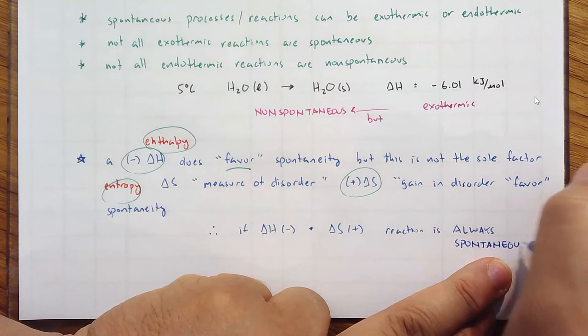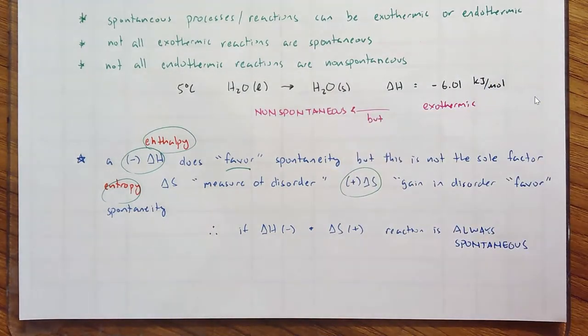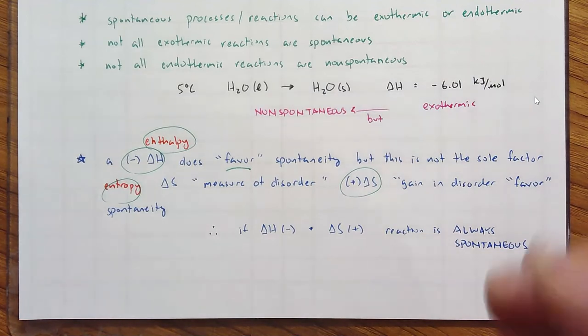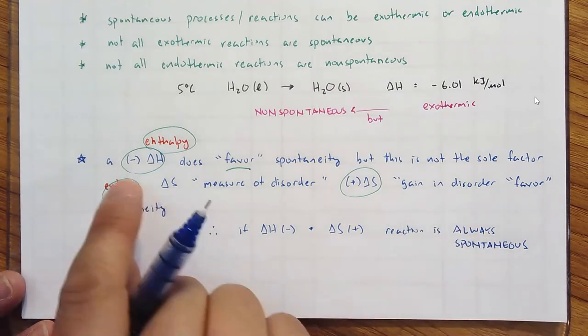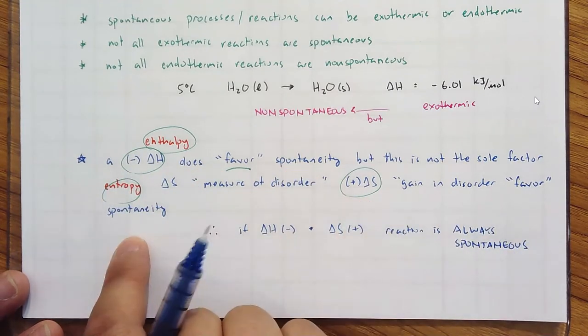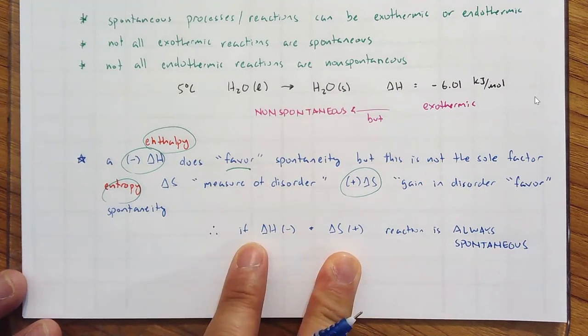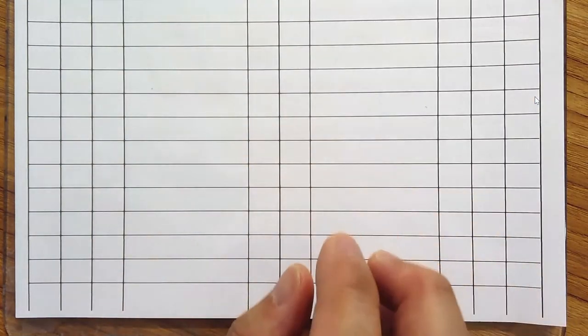I know you're thinking about all the permutations - what if delta H is positive and delta S is positive, or both are negative? We'll learn that in a couple of videos. But for now, because a negative delta H favors spontaneity and a positive delta S favors spontaneity, we know this to be always true. Let me give you the formal definition of entropy in part B.